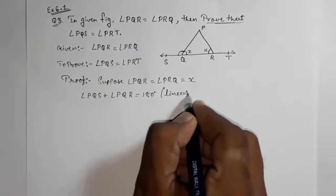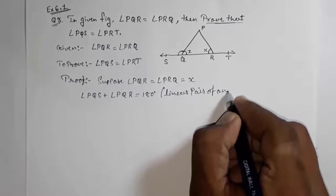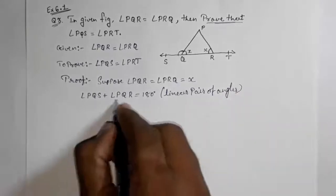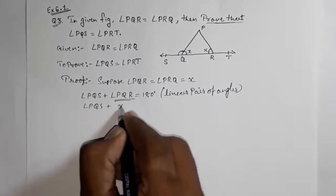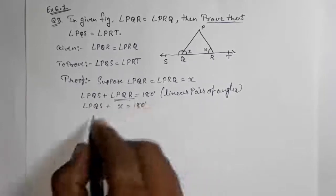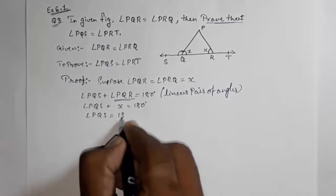So directly, if you know this is a linear pair of angles and this is x, then angle PQS plus x is equal to 180. Now take this x on that side: angle PQS is equal to 180 minus x.